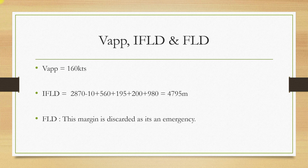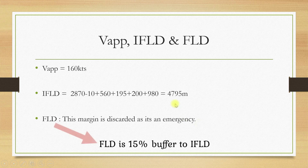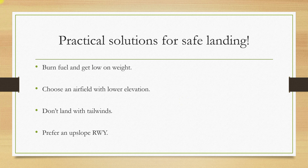Our V approach is 160 knots and our in-flight landing distance after applying all corrections comes out to be 4795 metres. This is very high. The factored landing distance is disregarded because we are facing an emergency and our priority is to stop the aircraft before the runway ends. Practical solutions for a safe landing include: burning as much fuel as possible to reduce landing weight while retaining a safe fuel reserve; choosing an airfield with a lower elevation, since we have seen how airport elevation impacts landing distance; avoiding tailwinds and always preferring an upslope runway, as these factors significantly impact landing distance.